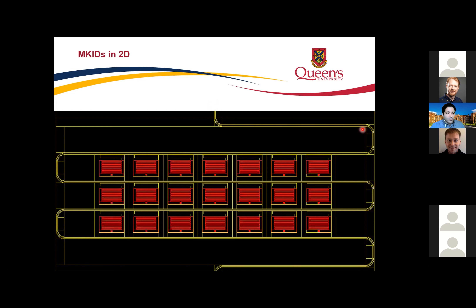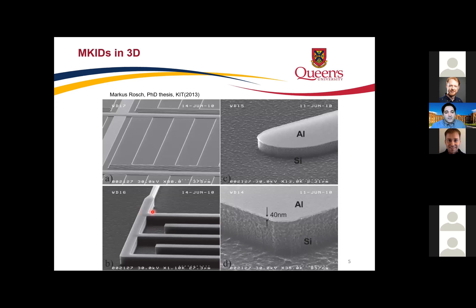We use a niobium transmission line because it becomes superconducting earlier than the pixels themselves, ensuring the transmission line is working before the pixel layer transitions. In three dimensions, you deposit a metal like aluminum or titanium nitride as a superconducting thin film on a substrate — silicon, germanium, or sapphire. The uniformity of the thin film thickness is very important; non-uniformity leads to problems with quality factor or overlapping frequencies.